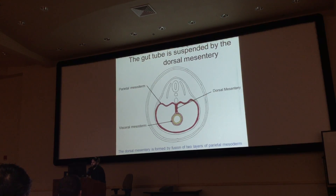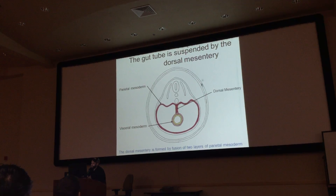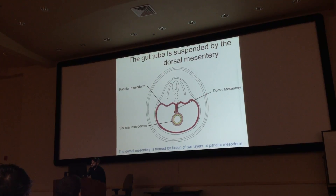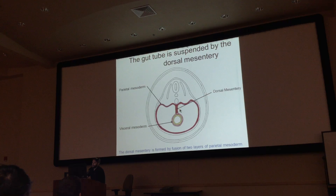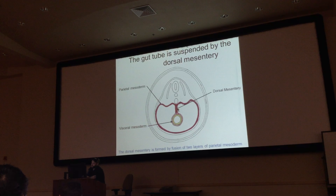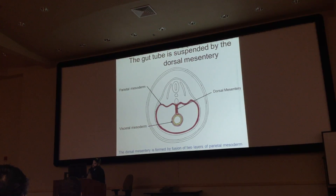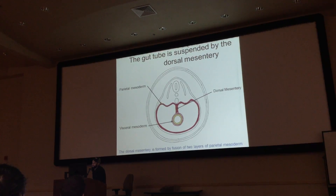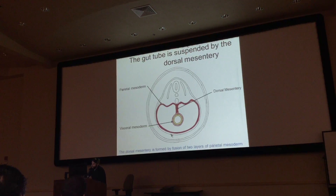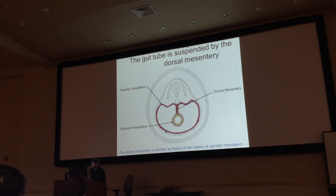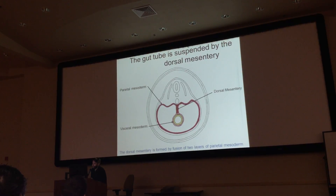He mentions that the gut tube is suspended by the dorsal mesentery. This dorsal mesentery eventually becomes the actual mesentery you see when dissecting the intestines — that nasty yellow stuff attached to your posterior abdominal wall. It's formed by a fusion of two layers of parietal mesentery. Most embryo questions on the test are straight facts rather than reasoning questions.